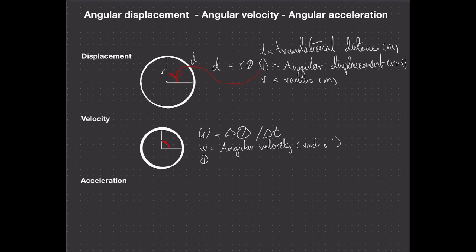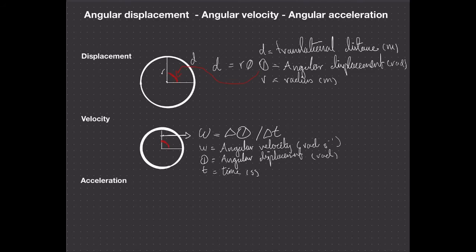Angular displacement is measured in radians, and time is in seconds. Angular velocity is the rate of change of that rotation — how many radians per second you're moving through. That would be our omega. To recap: displacement is the angle rotated through, with translational distance on the outside of the arc; velocity is the rate at which this rotation occurs, in radians per second, denoted by omega.